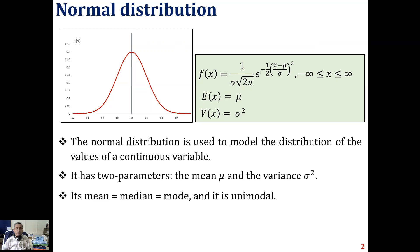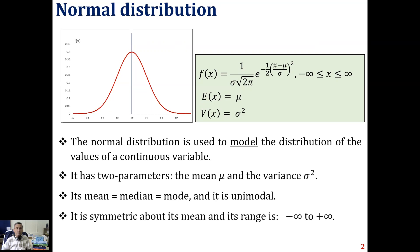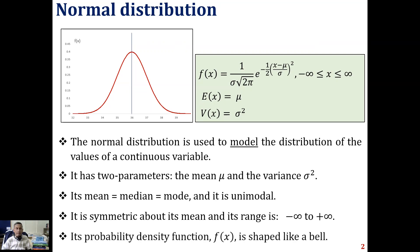The mean, median, and mode of the normal distribution are all equal to each other. It is unimodal. The normal distribution is symmetric about the mean and the range is minus infinity to plus infinity. The probability density function of the normal distribution, written as f(x), is shaped like a bell, as you can see in this figure.